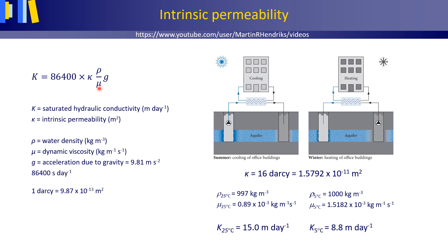are properties of the groundwater that are temperature-dependent. Water density is largest at 4 degrees Celsius, and viscosity decreases with increasing temperature. A hydrologist is interested in the movement of water, whilst a petroleum engineer is equally interested in the movement of carbon liquids and gases in the subsurface. Both these fields of expertise deal with porous subsurface media, and tribute has been paid to Henri Darcy by using the Darcy as the unit of intrinsic permeability, with 1 Darcy being 9.87 times 10 to the power minus 13 square meters.